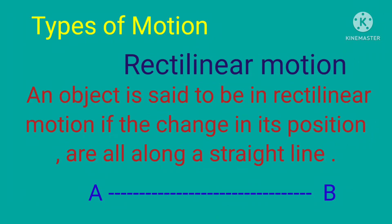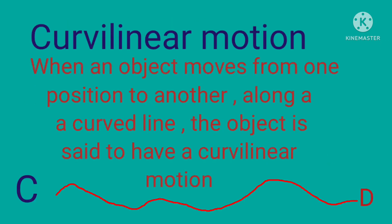In this video we will discuss types of motions in detail. An object is said to be in rectilinear motion if the changes in its position are all along a straight line.